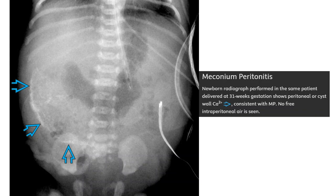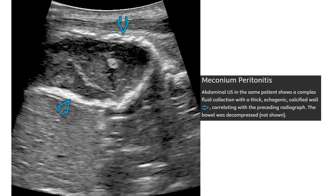Newborn abdominal radiograph performed at three weeks gestation showing peritoneal calcifications, consistent with meganium peritonitis. Peritoneal system with no free intraperitoneal air. Ultrasound shows complex fluid collection with echogenic calcified foci correlating with the preceding radiograph. The bowel was decompressed.